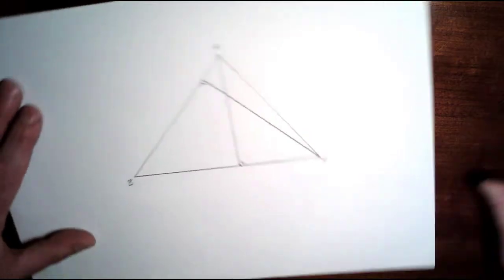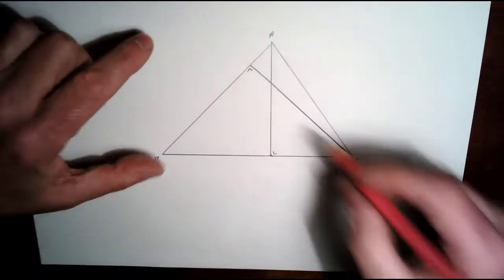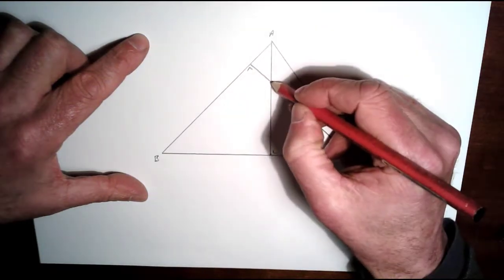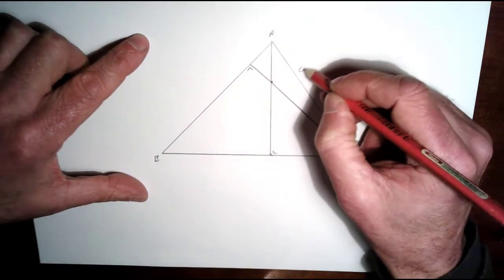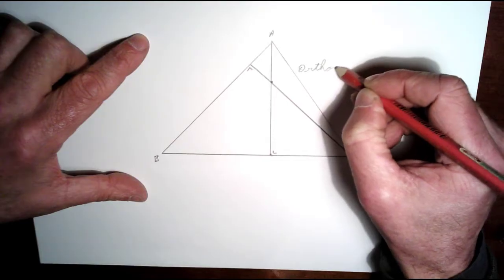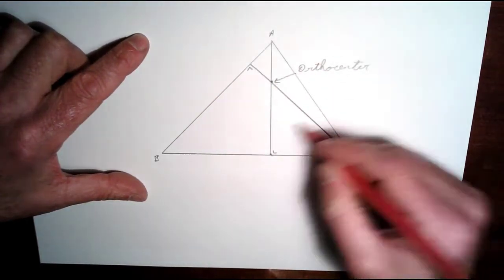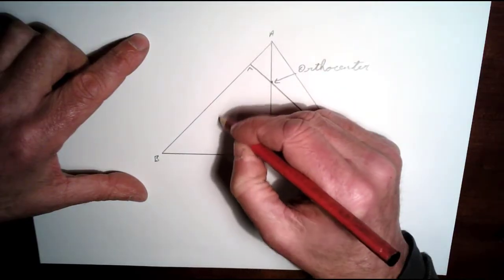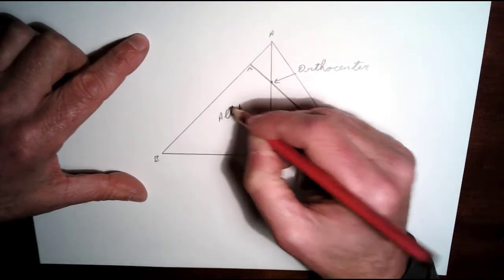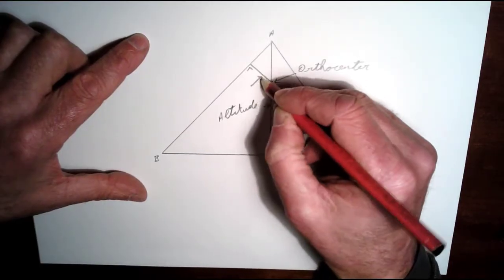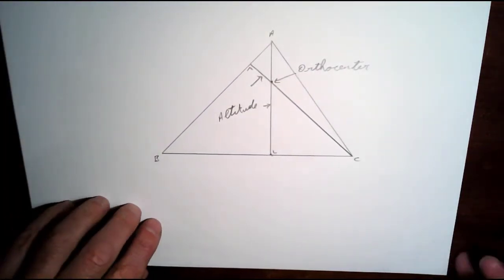That's it really—you have this point here with the intersection of the two altitudes, and that's your orthocenter. So that's your orthocenter, these are altitudes, and that's it really. Now that type of triangle there was an acute triangle—all the angles were acute.